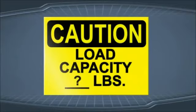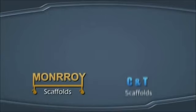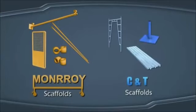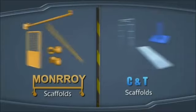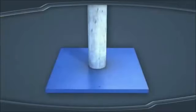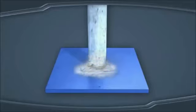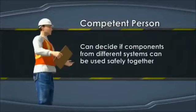Most scaffolding components have a designated load capacity given by the manufacturer. For the most part, components from different scaffold systems should never be mixed and matched. This is especially true of components that are made of different metals, because there can be a chemical reaction between the metals that weakens them. The competent person can decide if components from different systems can be used safely together.